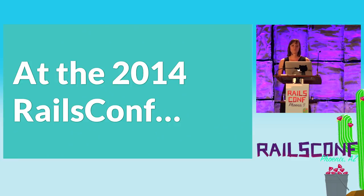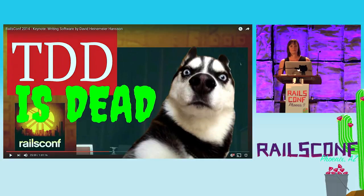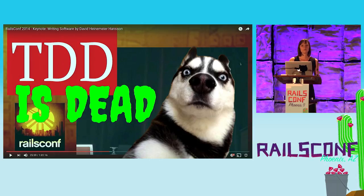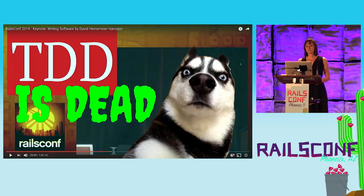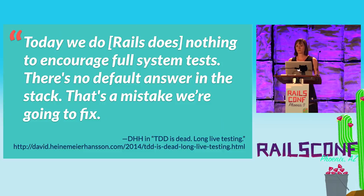At the 2014 RailsConf, DHH declared that test-driven development was dead. He felt that while TDD had good intentions, it was ultimately used to make people feel bad about how they wrote their code. He insisted that we needed to replace TDD with something better that motivates programmers to test how applications function as a whole. In a follow-up blog post titled 'TDD is dead, long live testing,' David said: 'Today Rails does nothing to encourage full system tests. There is no default answer in the stack. That's a mistake that we're going to fix.'